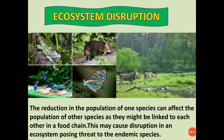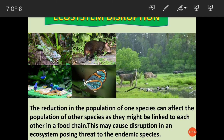Another reason could be ecosystem disruption. The living organisms in an ecosystem are often linked together, and that link might be a food chain. When the population of one species is reduced, it can affect other species linked to it — including endemic species — causing disruption in the ecosystem and posing a threat to the population of endemic species.